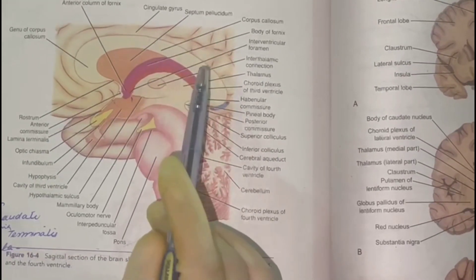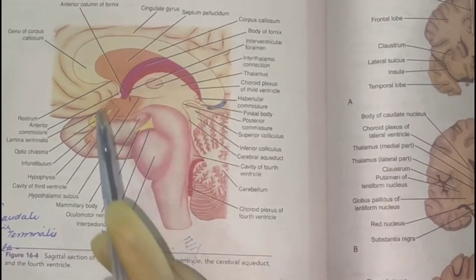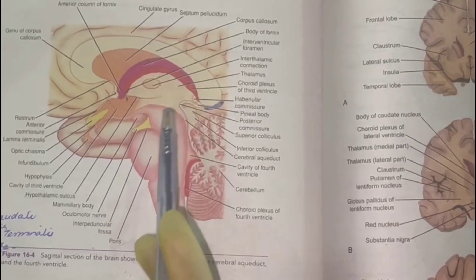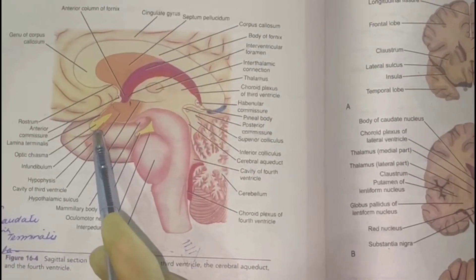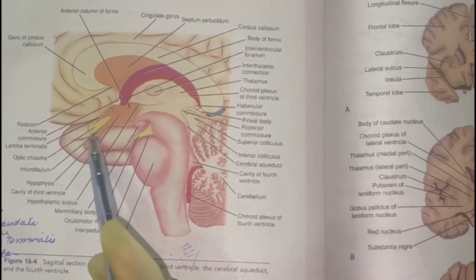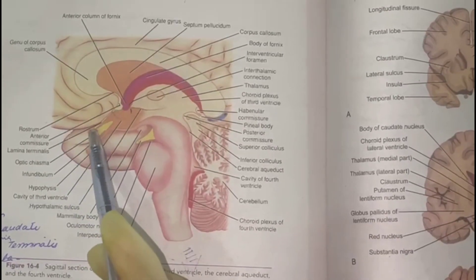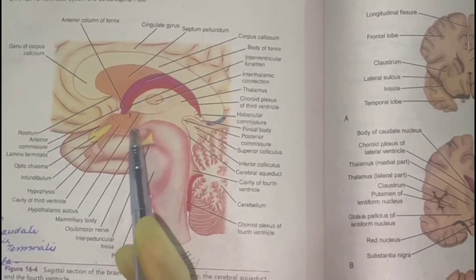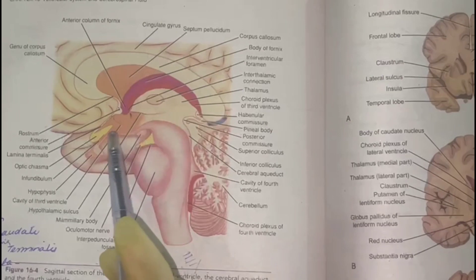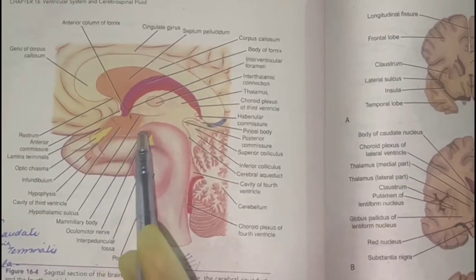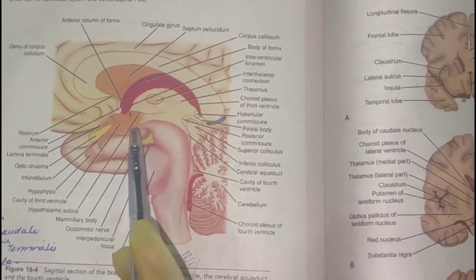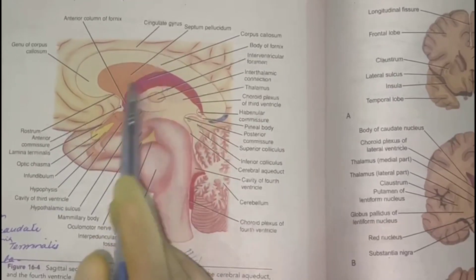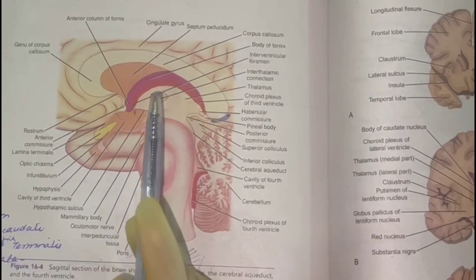Moving on to the inferior wall of the third ventricle, it is formed by the optic chiasm, the tuber cinereum, and the mammillary body. These — the optic chiasm, the tuber cinereum, and the mammillary body — are the structures which form the inferior wall of the third ventricle.